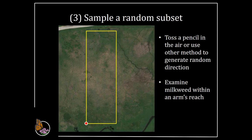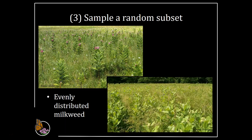Another option is to sample a random subset of milkweeds. Walk to an edge of your monitoring plot and select a random direction — you could spin a pencil in the air and walk the direction it points, spin a dial, or use a random number or bearing generator online. Walk in that direction and examine all milkweeds within arm's reach. When you reach the other side, select another random bearing. Continue until you've adequately sampled the area or reached 100 milkweeds. You'll be walking different random transects each visit, and that's okay — it's not necessary to examine the exact same plants every time. This method is good for sites with evenly distributed milkweed.